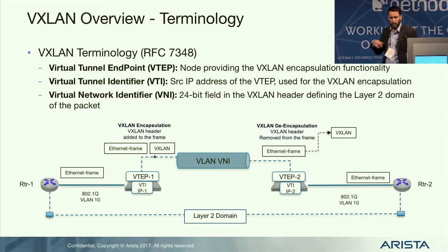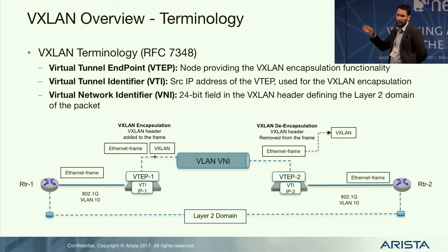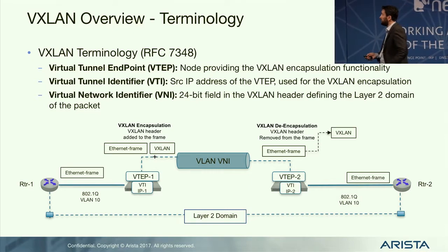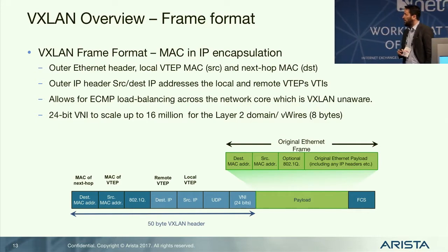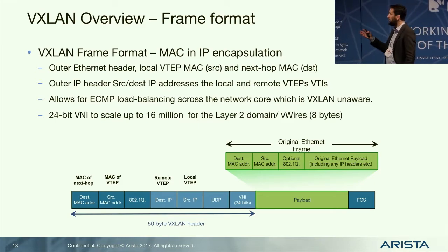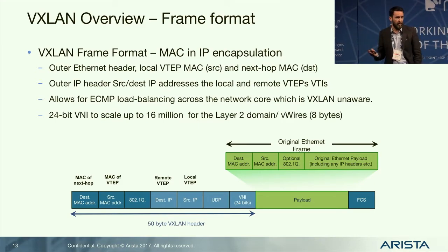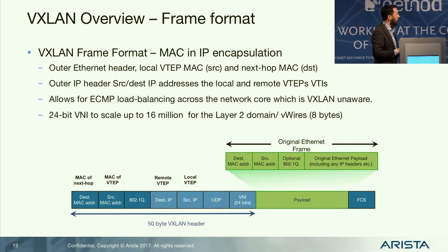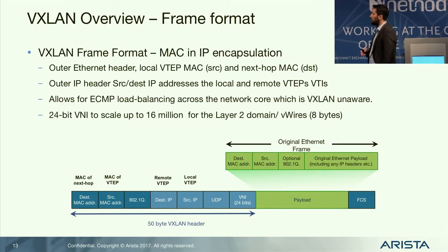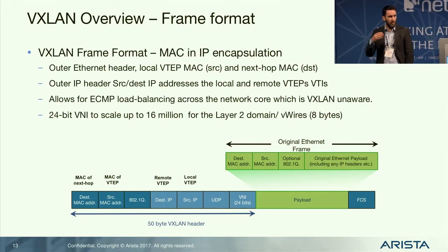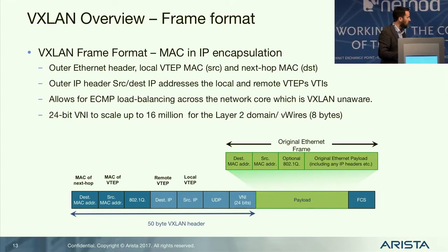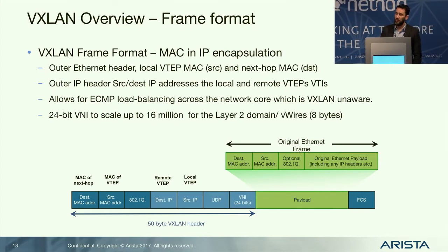There's also the VTI, which becomes the source IP address of the outer frame. The frame itself: I take the whole Ethernet frame, wrap it in a VXLAN header containing my layer 2 domain identifier, then wrap it inside UDP, with source and destination IP addresses representing the encapsulating VTAP and the destination VTAP that will do the decapsulation. The packet then simply gets routed across the IP infrastructure.